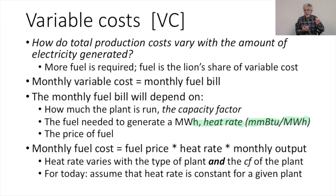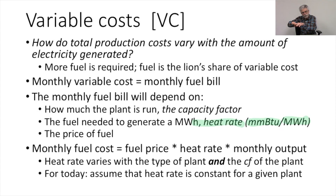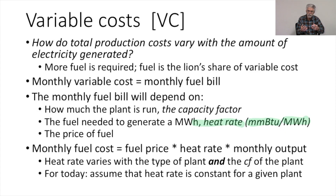In fact, the same power plant may have different heat rates at different capacity factors. The heat rate may be very high at really low capacity factors, but then it falls into a more efficient range as we get into the normal operating range of the power plant. And then if you push the power plant really hard up to its extreme design capacity, the heat rate might start to rise again. Each plant will have its own characteristic heat rate at different capacity factors.